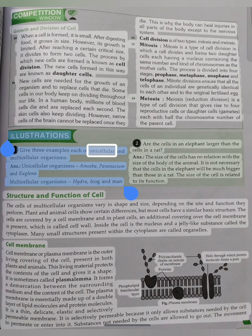Illustrations. Give three examples each of unicellular and multicellular organisms. Answer: Unicellular organisms: amoeba, paramecium and euglena. Multicellular organisms: hydra, frog and man. Are the cells in an elephant larger than the cells in a rat? Answer: The size of the cells has no relation with the size of the body of the animal. It is not necessary that the cells in the elephant will be much bigger than those in a rat. The size of the cell is related to its function.